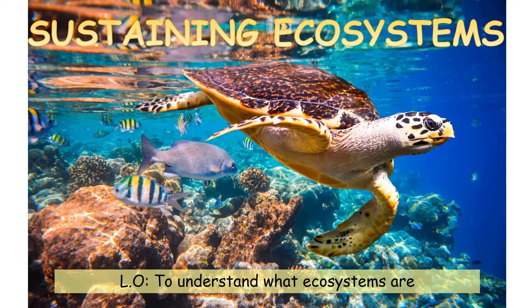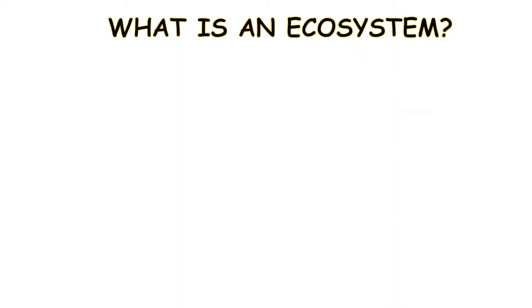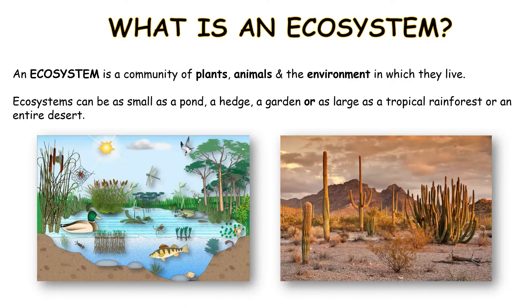Sustaining ecosystems. The idea of this session is to look at what ecosystems are and also look at some of the words and terms that are associated with ecosystems. So what is an ecosystem? An ecosystem is a community of plants, animals and the environment in which they live. They can be as small as a pond or they can be huge — the size of a desert or the size of a rainforest.